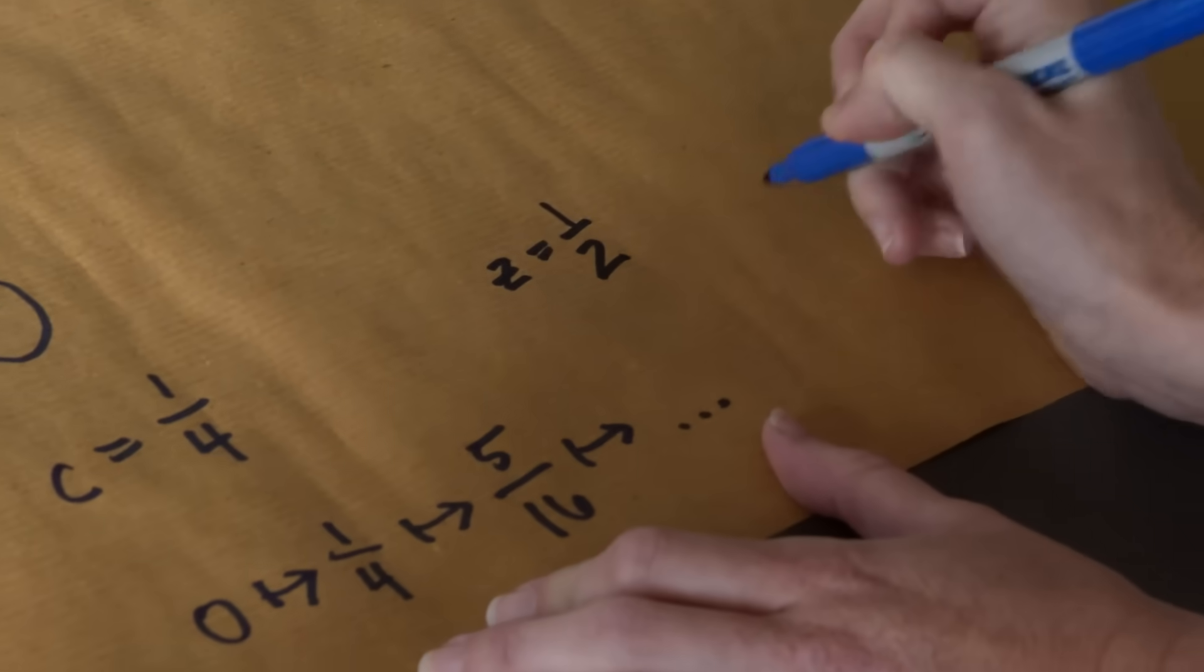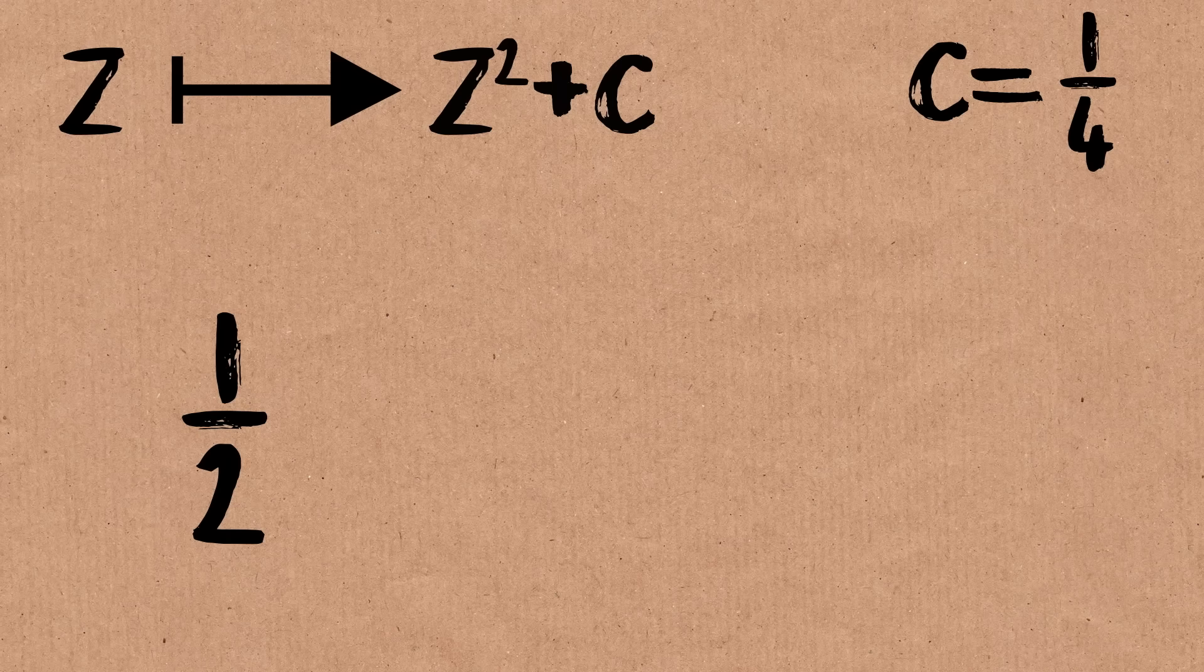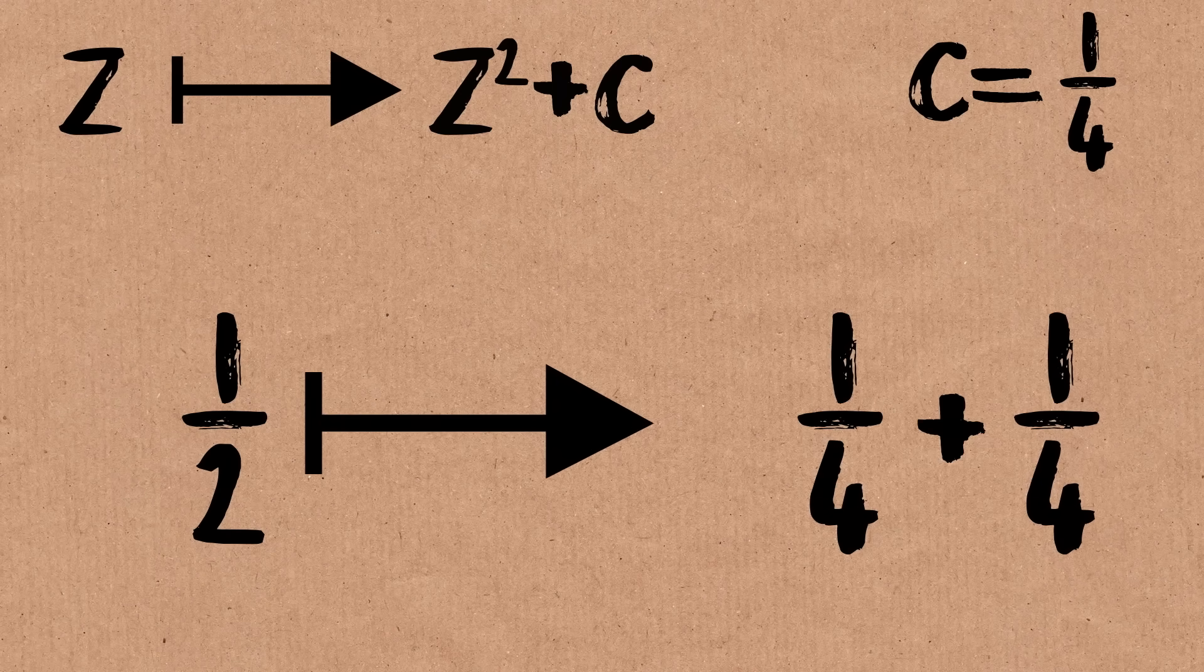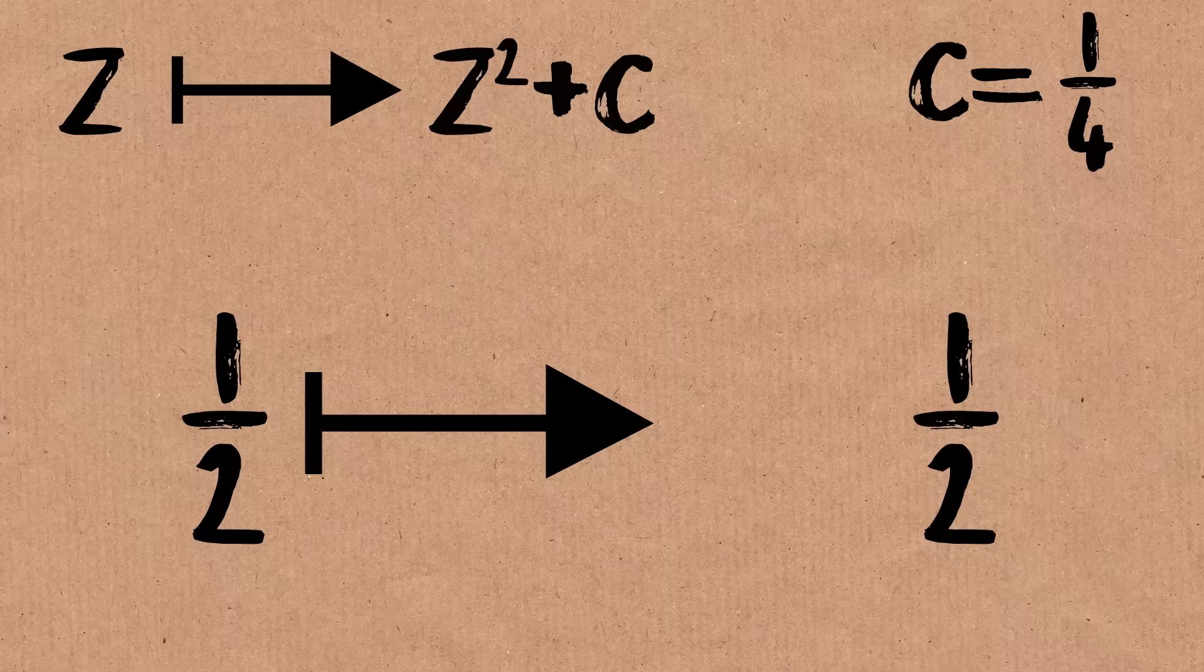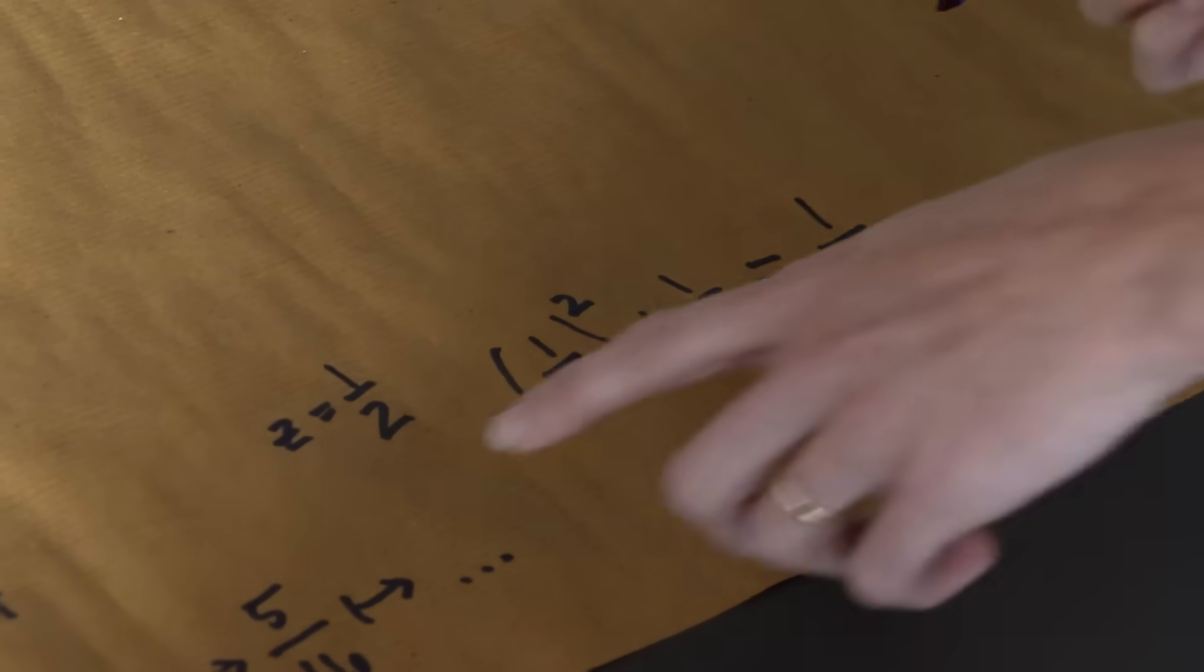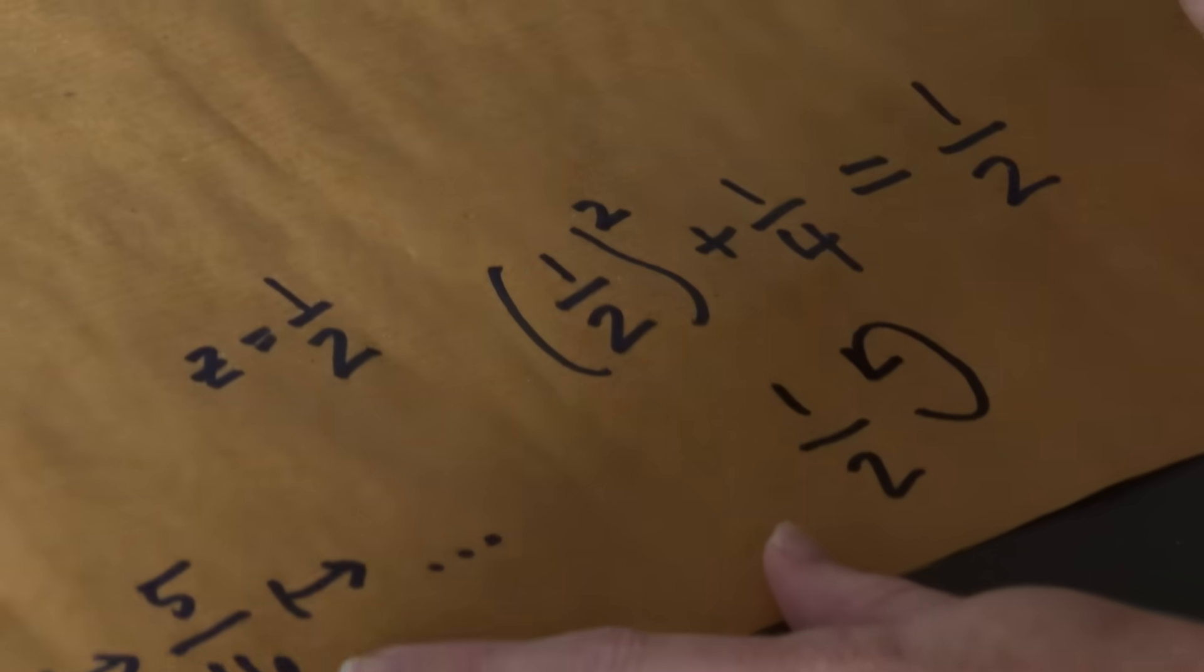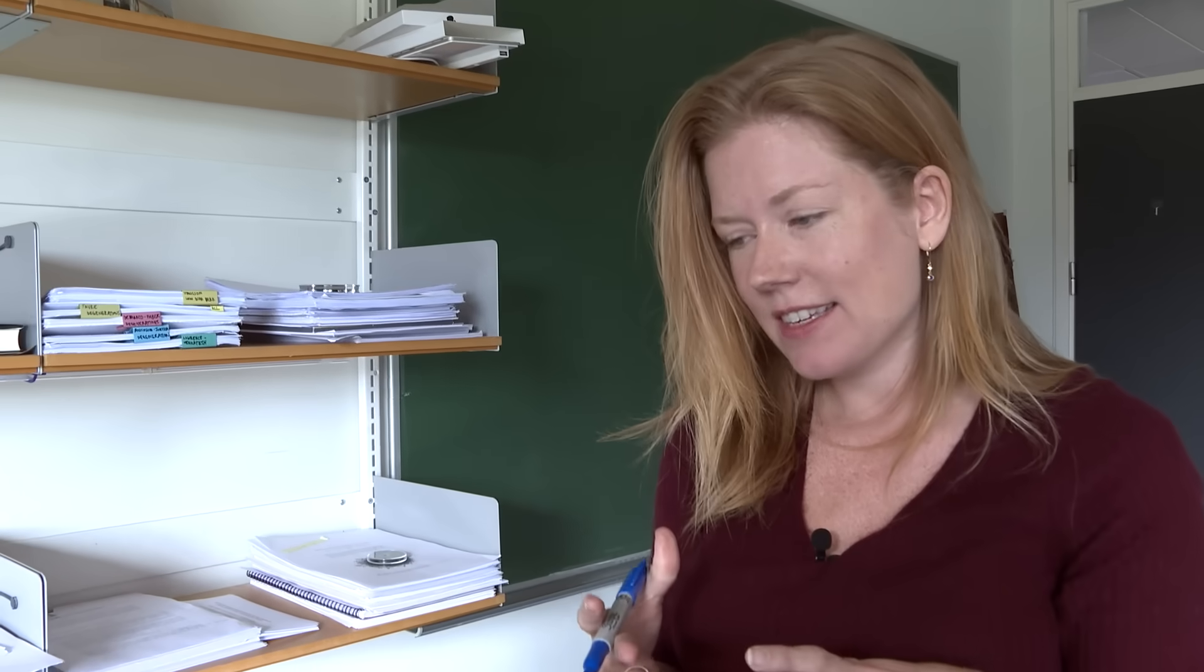But if instead we start with z equals 1 half, then if we take 1 half and we square it, and we add 1 quarter, we end up right back where we started. So we found another example of something that just comes right back to itself, but is a fraction. So it can happen for fractions. And the good news is that it's not just coming right back to yourself immediately that happens.